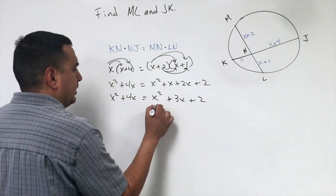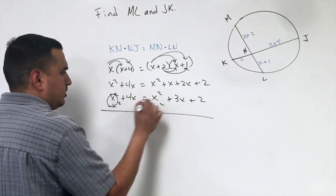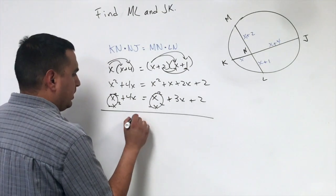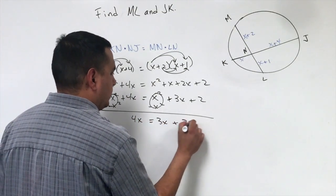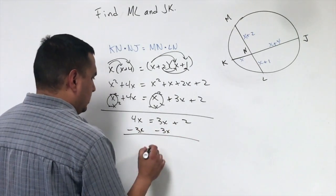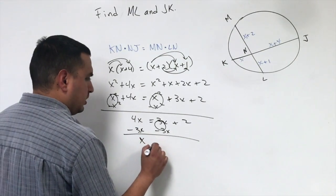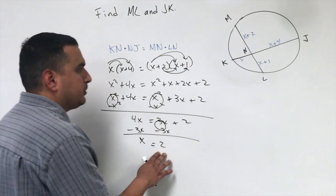I can subtract the x squareds on both sides. That goes to 0 and that goes to 0. So here I have 4x is equal to 3x plus 2. If I subtract 3x from both sides, that goes to 0. So that 4 minus 3 would be 1x. So x is equal to 2.